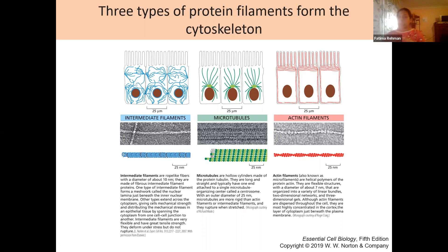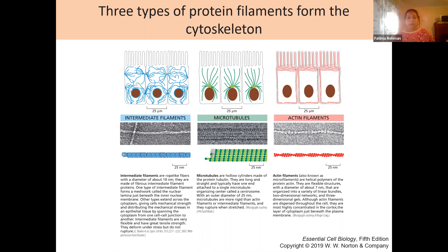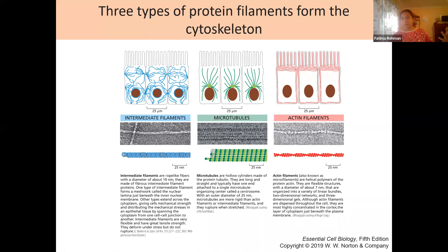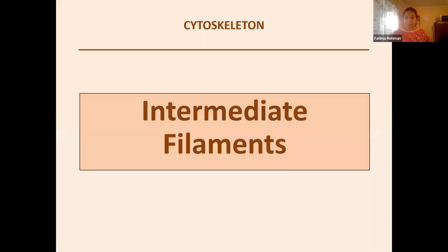Actin filaments also allow for flexibility of cells and transport of things from one place to another. Intermediate filaments are extremely important, especially in the nucleus where they are part of the laminal structure. They also provide a lot of strength to cells so they can withstand mechanical stress. These are like the heavy bundles maintaining general structure, while intermediate filaments interweave between larger bands to provide additional strength.